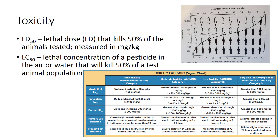A pesticide with a low LD50, for example 5 milligrams per kilogram, is very toxic, whereas a pesticide with a high LD50, for example 1,000 to 2,000 milligrams per kilogram, is less toxic to the tested animal. Toxicity measurements are used to compare the lethal potential of one dose of one pesticide with another.